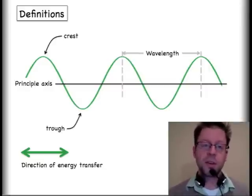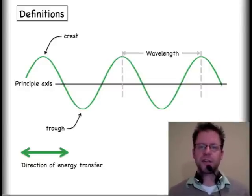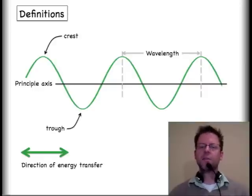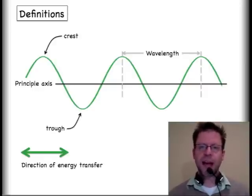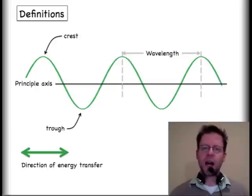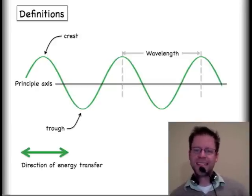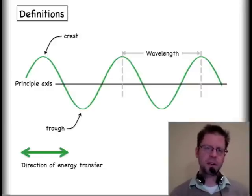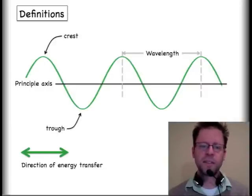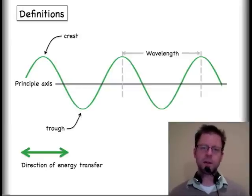To look at that information with something of a more still shot, let me come back to our general discussion of a wave. Recall that we have something called the principal axis, which is kind of the central point. It is the equilibrium position for a wave. The high point of a wave we often call the crest. The low point is the trough. The distance between a crest and another crest, the adjacent crest, is something that we call the wavelength. In this particular picture, I'm showing that energy is being transferred from left to right.